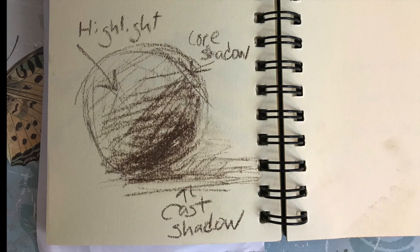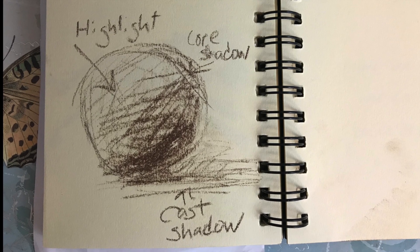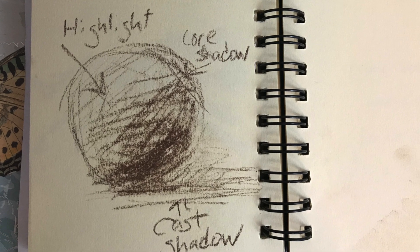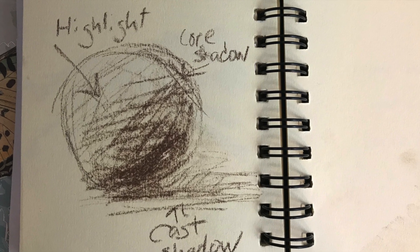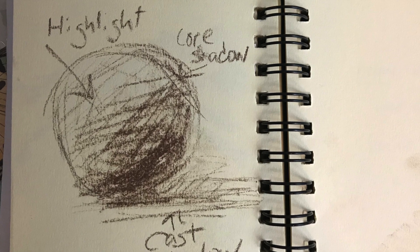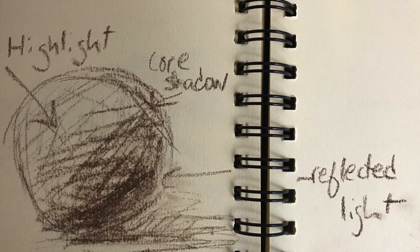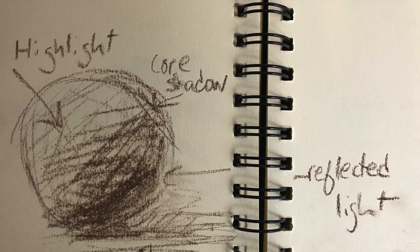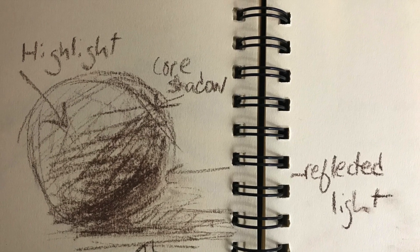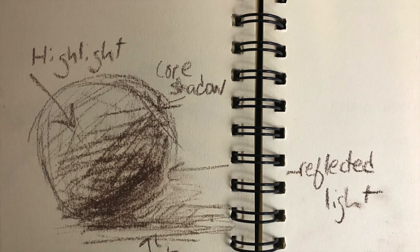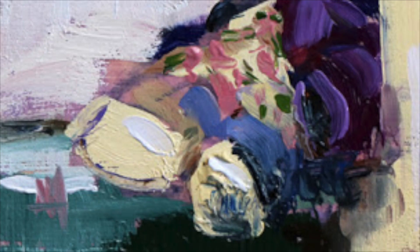Then we have our cast shadow — that's where the object is blocking the light and leaves a shadow. We also have reflected light, which is bouncing off the surface. The shinier the surface, the more light is going to bounce, and it also depends on the texture of your object.